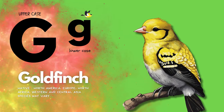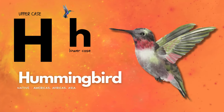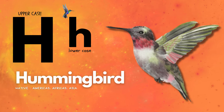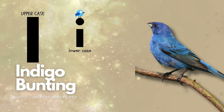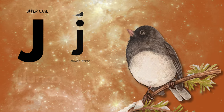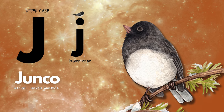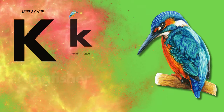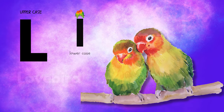G for Goldfinch. H for Hummingbird. I for Indigo Bunting. J for Junco. K for Kingfisher. L for Lovebird.